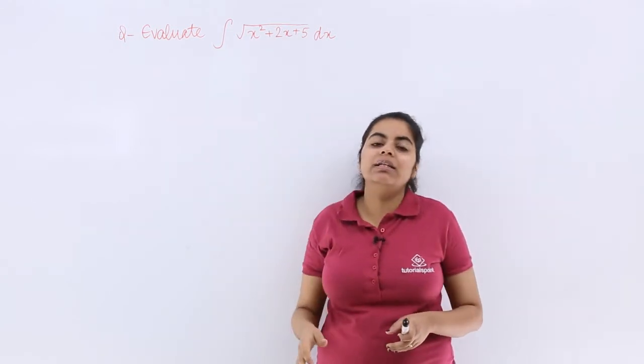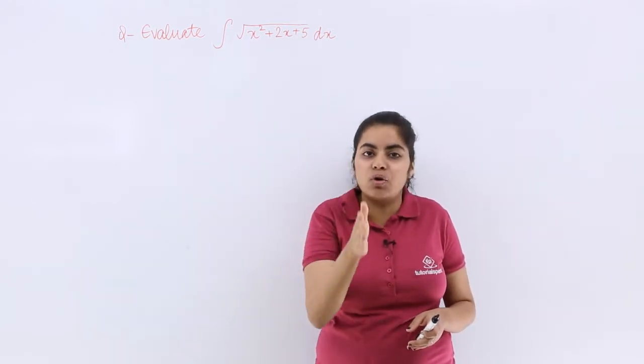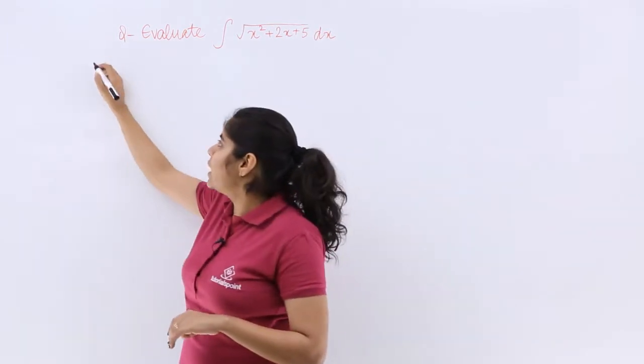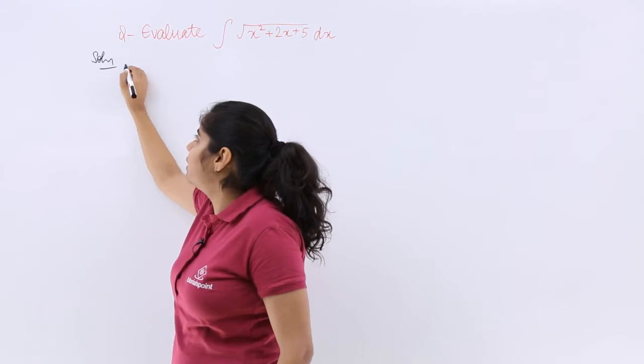You add and subtract the half of the coefficient, then square it. Let me do it to make things more clear.